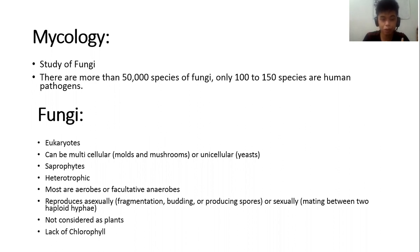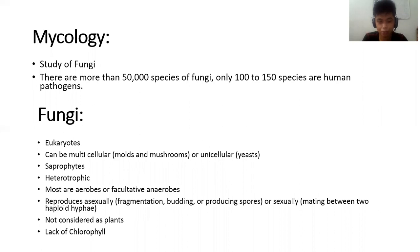Fungi are eukaryotes, which means there is a membrane-bound nucleus in their cells. Fungi can be multicellular or unicellular depending on their form — molds and mushrooms are multicellular, while yeasts are unicellular. They are also saprophytes, meaning they acquire nutrients from organic substances through chemical processes and from decaying substances or organisms. They are heterotrophic, so they cannot manufacture their own food.